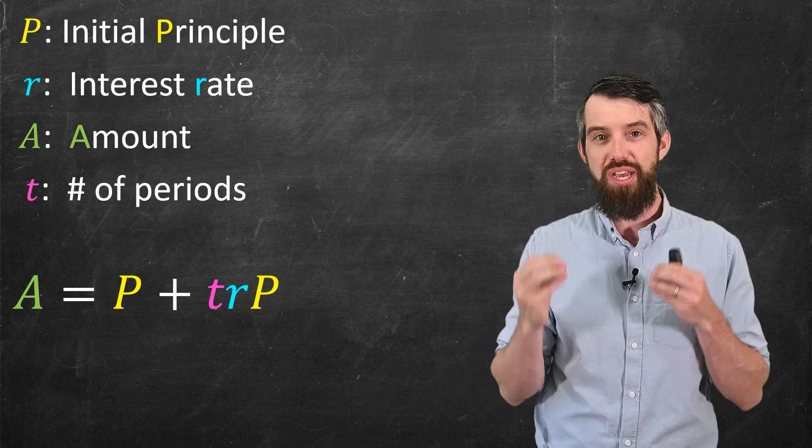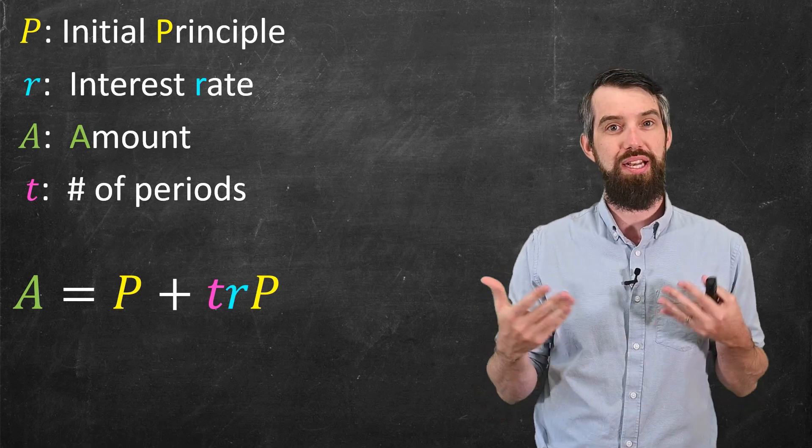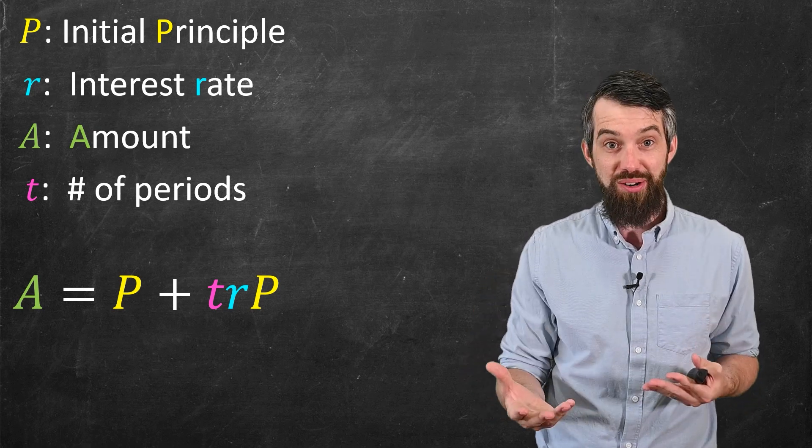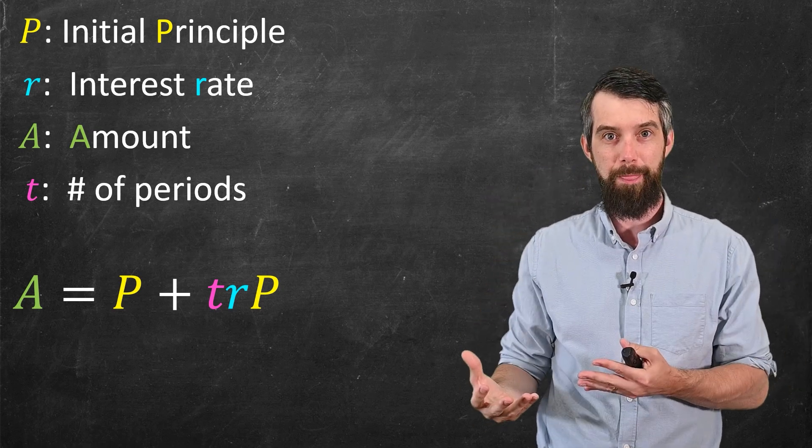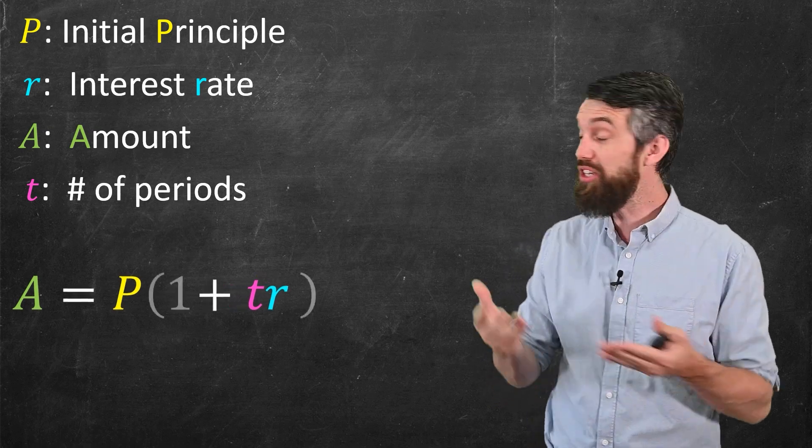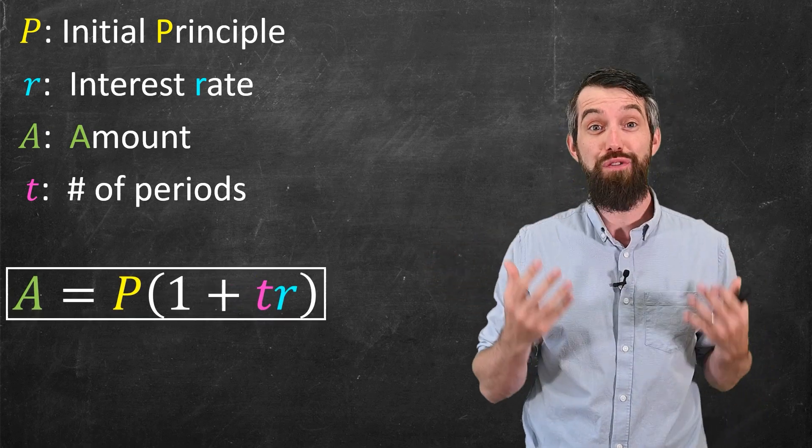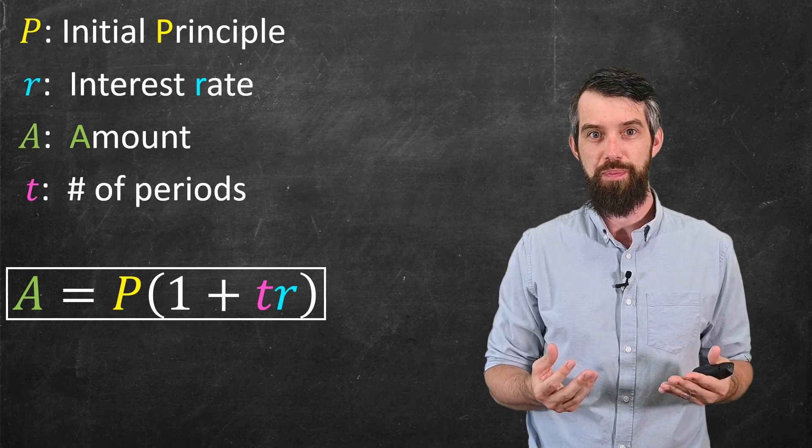where t is the number of periods. So for example, if your period is a year, and you loan it out for three years, then you'd get your principal plus three times rP. I notice that there's actually a P in both factors here, so I can just factor it out and I get my final formula for simple interest.